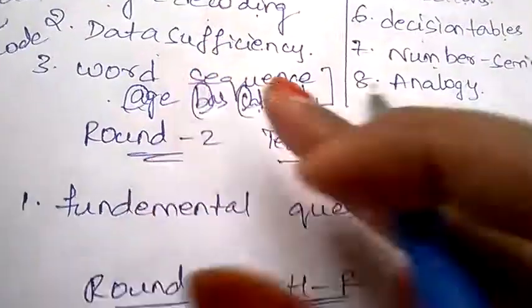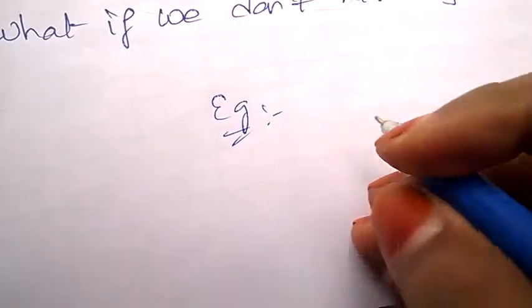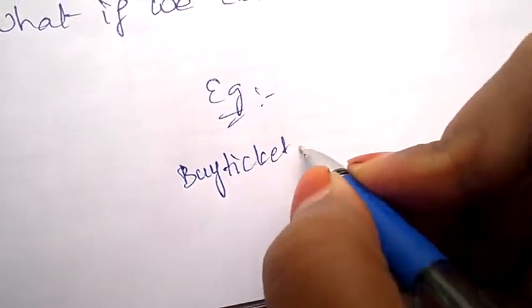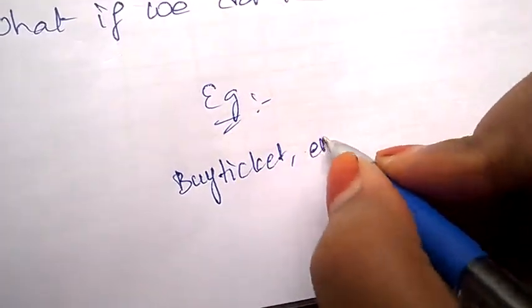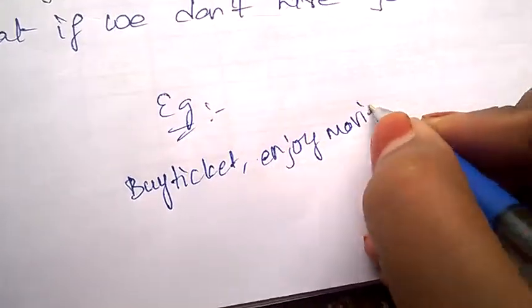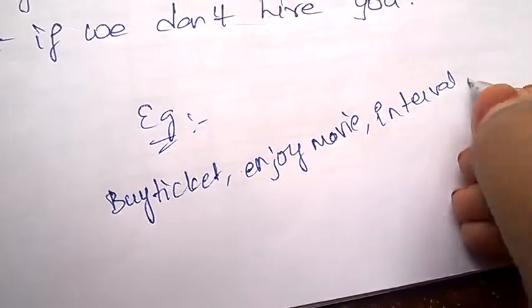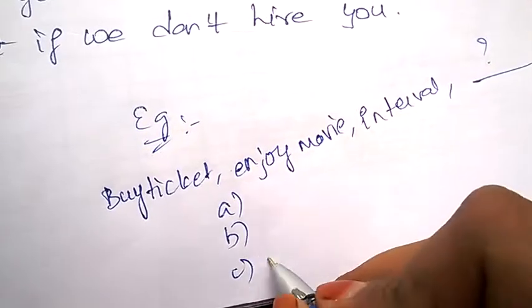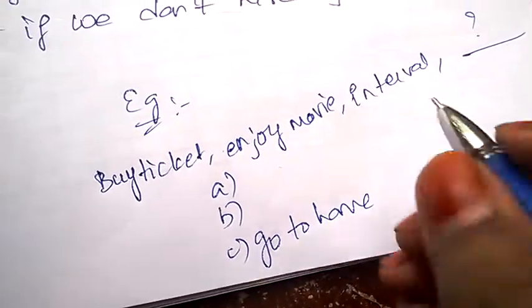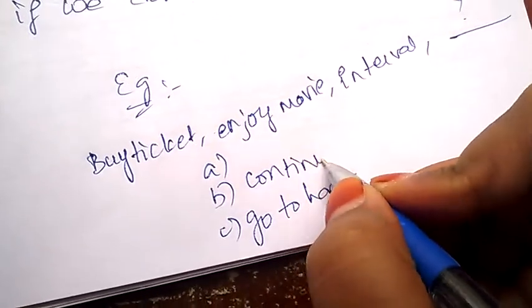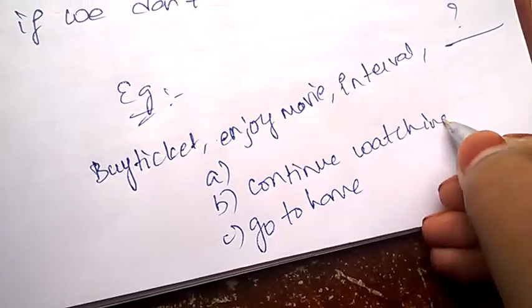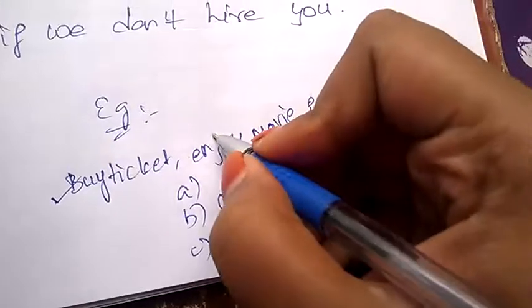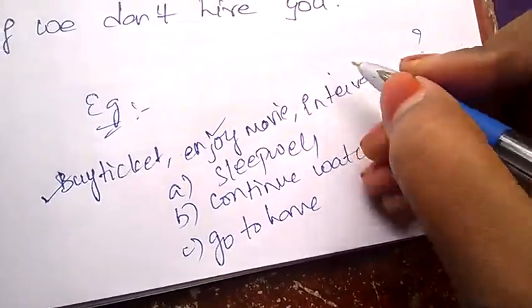Another kind of word sequence is: buy ticket, enjoy movie, interval, and what word comes here? There'll be options: go to home, continue watching movie, or sleep well.